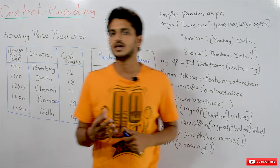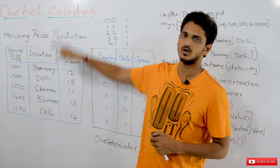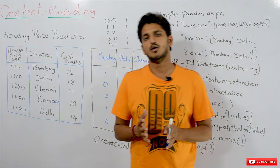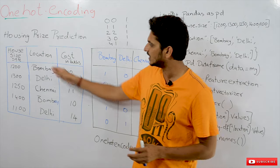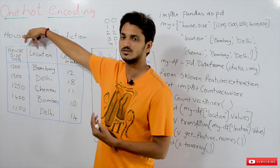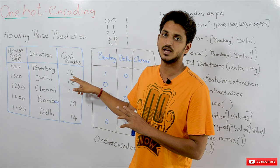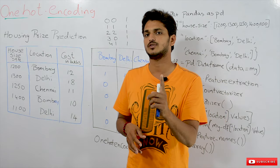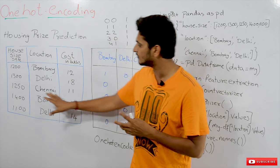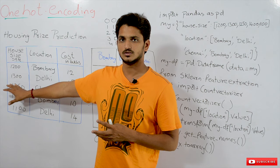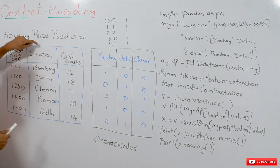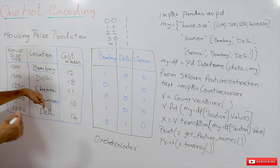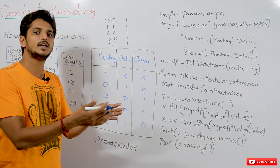Now we understand what problems we come across with categorical data, and then we go for one-hot encoding. The problem is that in most ML models we do some basic algebra — comparing two different features, identifying the distance between two different data points. This was already discussed in our linear regression model. In order to do that calculation, categorical data is given in string format, and we cannot do calculations on it. That's why we have to convert this categorical data into numerical format.